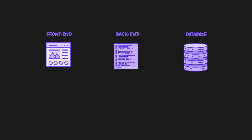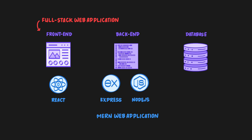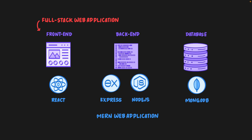Quill is a full-stack web application that is built from scratch. It is known as a MERN web application with React on the front-end, Express and Node on the back-end, and MongoDB as the database.